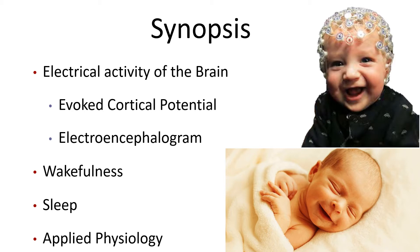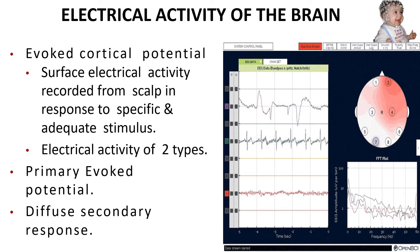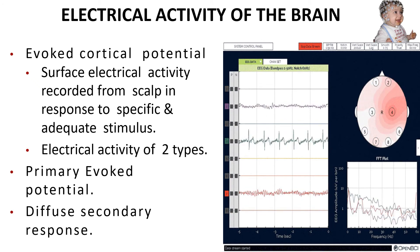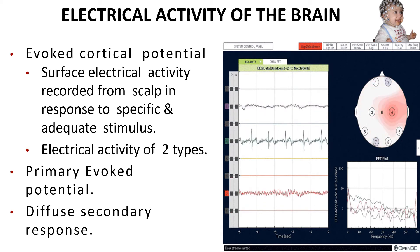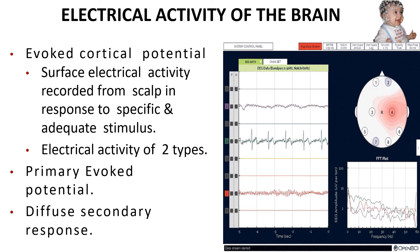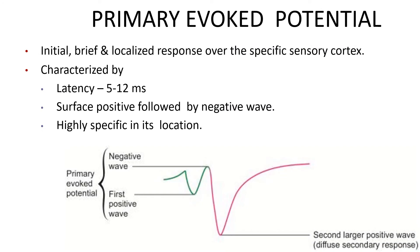Electrical activity of the brain — evoked cortical potential refers to the surface electrical activity recorded from the surface of the scalp in response to a specific and adequate stimulus. These stimuli can be auditory, visual, or somatosensory, and they produce two types of electrical activity in the cerebral cortex: the primary evoked potential and the diffuse secondary response.